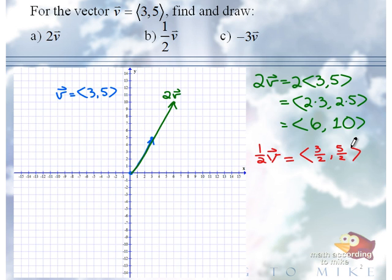All right, so the component form was 3 halves, 5 halves. So 1.5, 2.5, let's see, 1.5, 2.5. My scaling's a little off here. That's okay. Oh, that looks okay. That's fine. It's the same direction as vector V, just half as long.